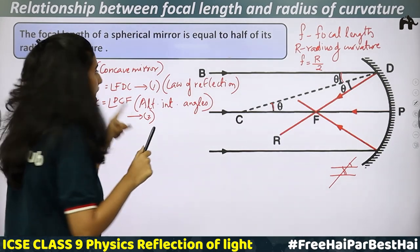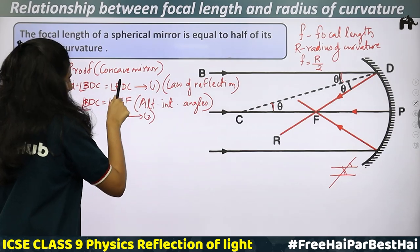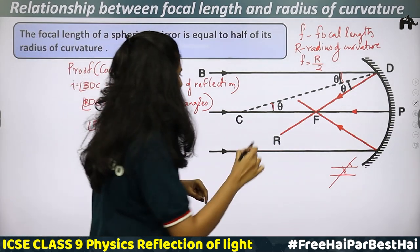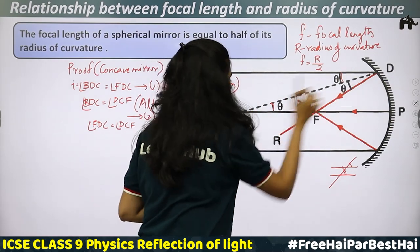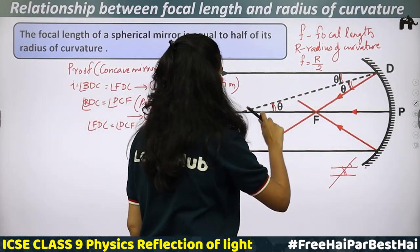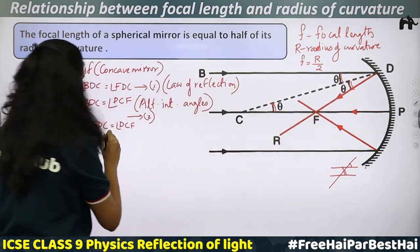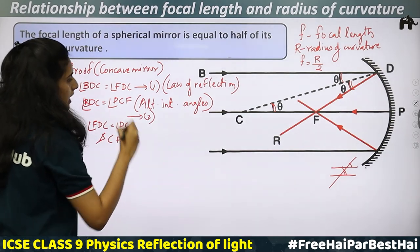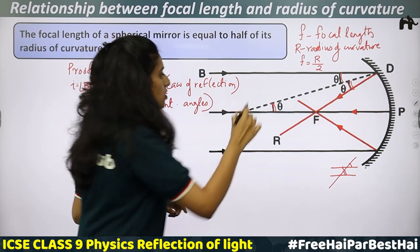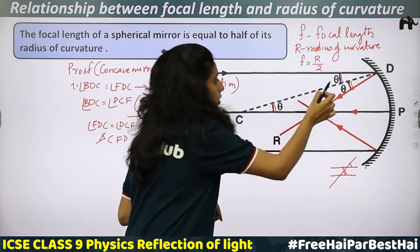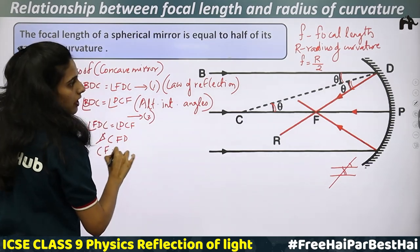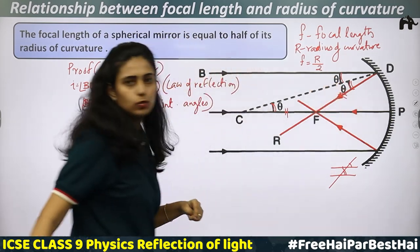From both equations, the left-hand side is angle BDC in both cases. Therefore angle FDC equals angle DCF. These two angles belong to the same triangle CFD. In triangle CFD, since two angles are equal, it is an isosceles triangle. The sides opposite to equal angles are equal, so CF equals DF.